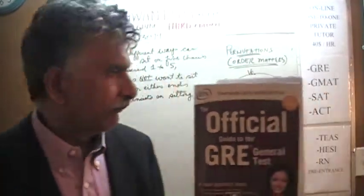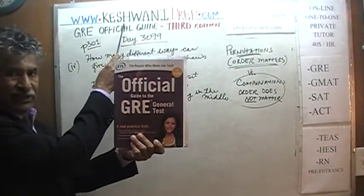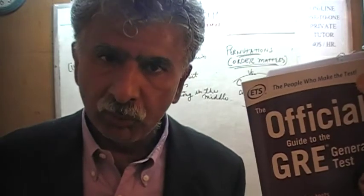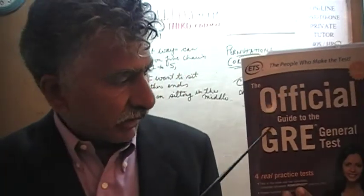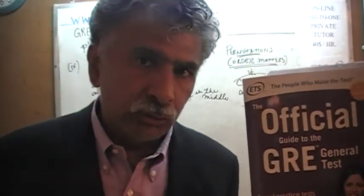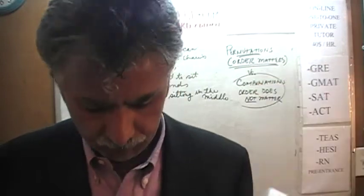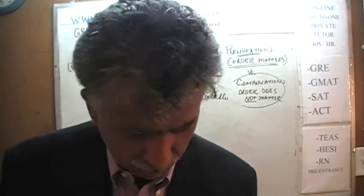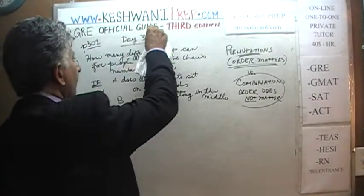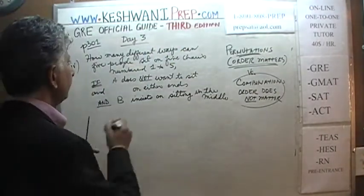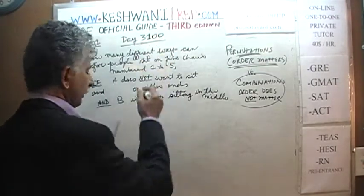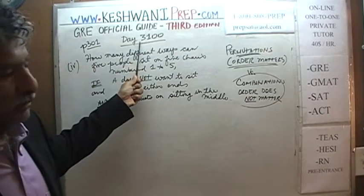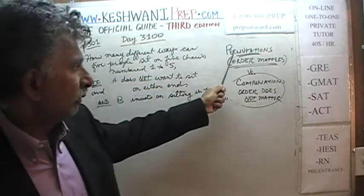Hello, my name is Keshwani, that is K-E-S-H-W-A-N-I. We are here because we want to prepare for the GRE. We have been solving math problems out of this book, the official guide to the GRE, the third edition. If you do not own this book already, purchase one immediately — you are going to need it. Today is our lesson number 100, day 3100. The 3 in the 1000th place signifies that we are in the third edition. Day 100, we are on the topic of permutations versus combinations, which you will find on page 301.